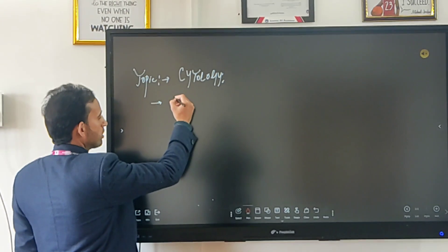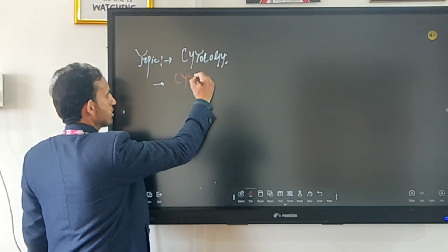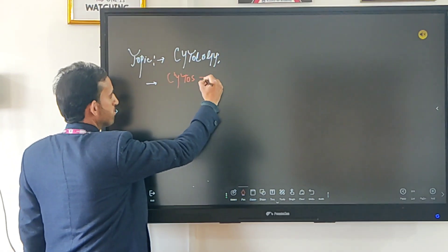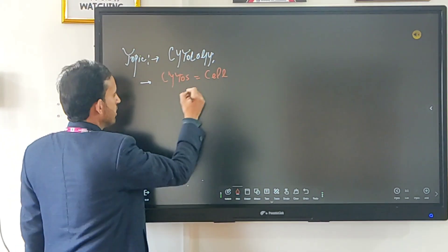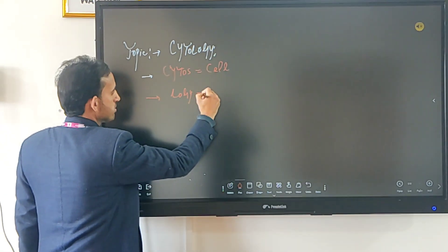The term psychology is actually derived from two words. One is psychos. Psychos means cell. And the second one is logi. Logi means study.